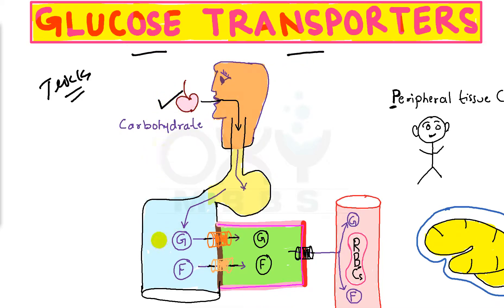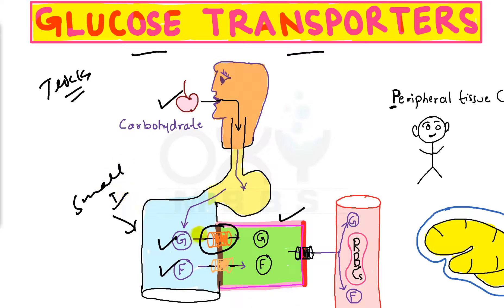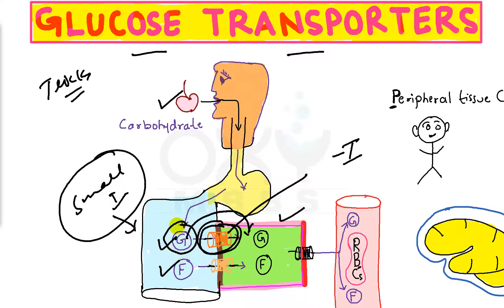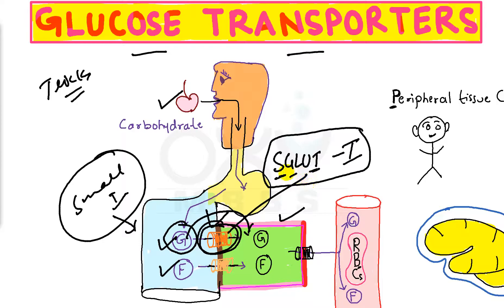This is an apple, and from the apple we get glucose and fructose. Now this glucose is able to enter into the enterocyte through a transporter. As it is present in the small intestine and glucose is entering for the first time, its name must have number one — that is SGLT1, sodium-glucose transporter number one. Through this transporter, glucose enters the enterocyte from the lumen of the small intestine.